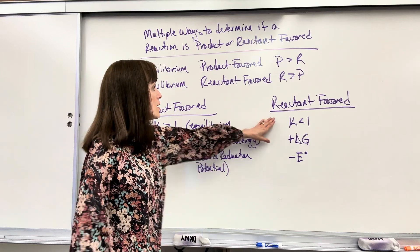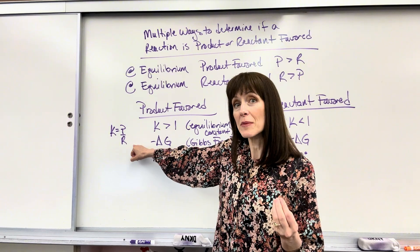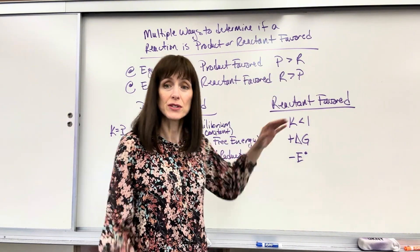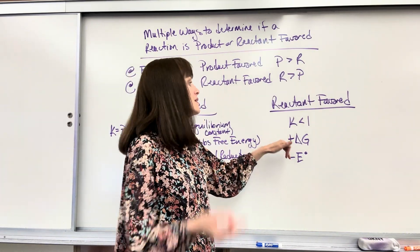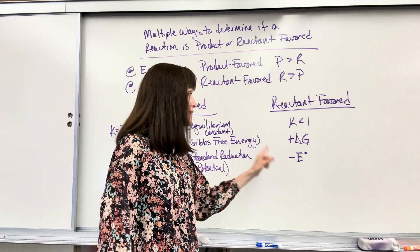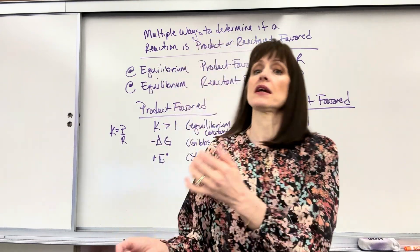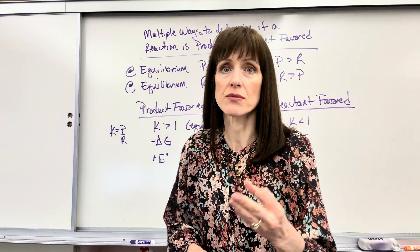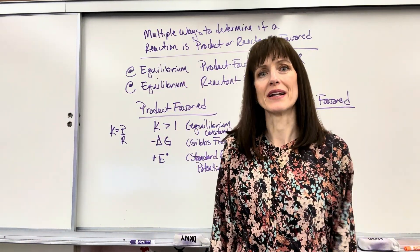And then the reverse with reactant favored: if K is less than 1, you have more reactants — a bigger denominator than numerator — that's reactant favored. If delta G is positive, non-spontaneous, that gives free energy back — reactant favored. And a negative E-naught, a negative standard reduction potential, gives you a reactant favored reaction. So the three fast ways — looking at your K value, delta G, and standard reduction potential — you can answer: is this reactant or product favored?